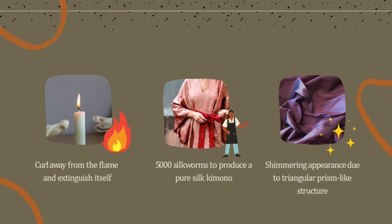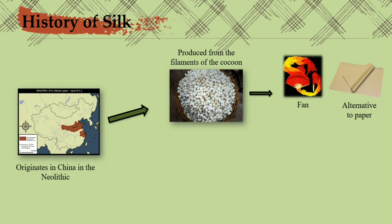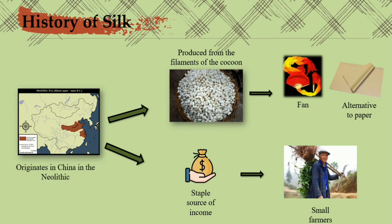Now we're going to move on to the history of silk. The production of silk originates in China. It is a fabric first produced from the filaments of the cocoon of the silkworm. Not only used to make fine clothes, it was also used for fans, wall hangings, banners, and as a popular alternative to paper for writers and artists. It became a stable source of income for small farmers.